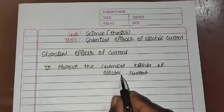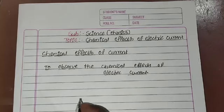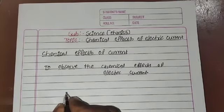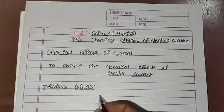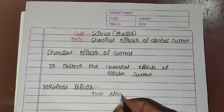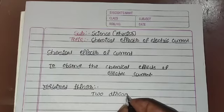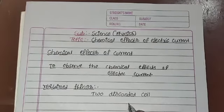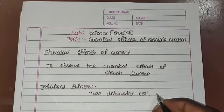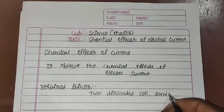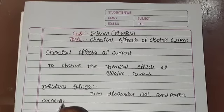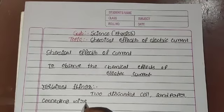To conduct the activity to observe the chemical effects of electric current, we need some required things. Things required to perform the activity: two discarded cells — discarded means not working — sandpaper, and connecting wires.